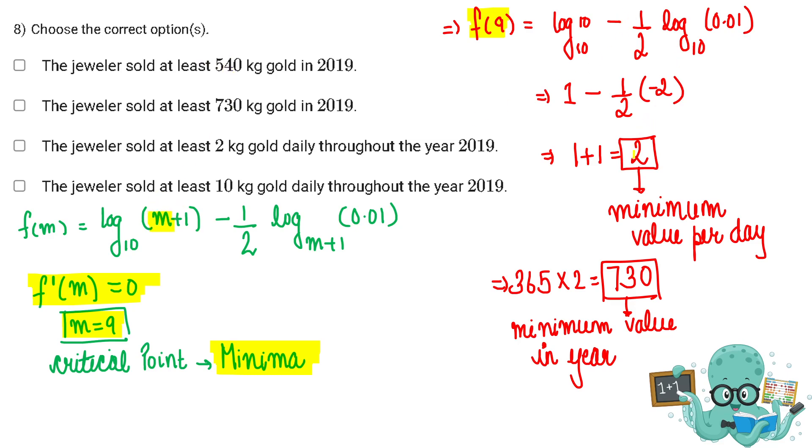After calculating you will get two as the answer. Therefore two kgs is the minimum gold that a jeweler sold every day, so basically option C is correct.